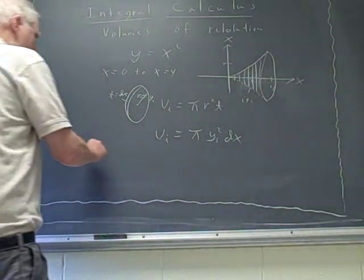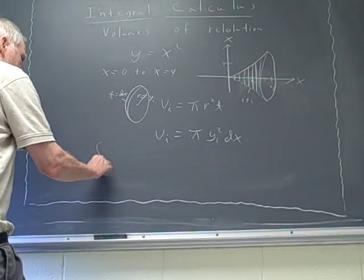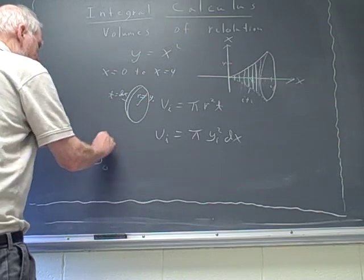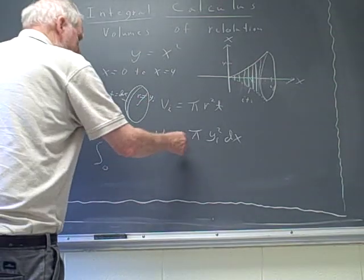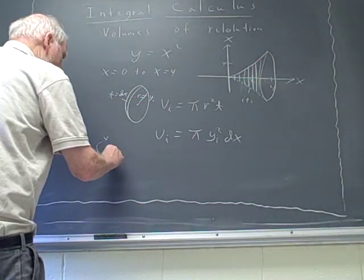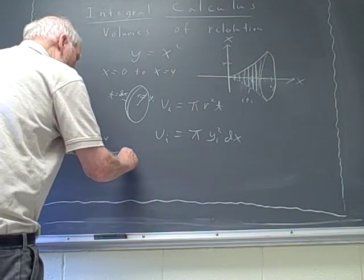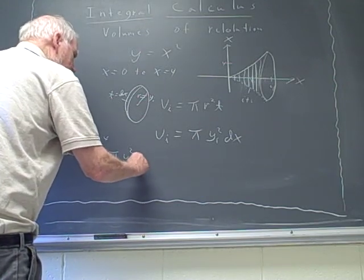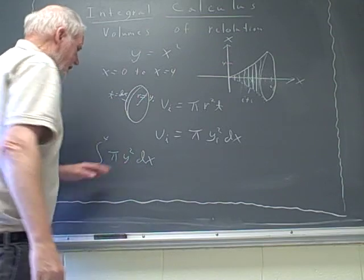We say that, we'll go over here for a second. It's the integral from zero to four of each one of these little v sub i's, which would be pi y squared dx. And there's our integral.